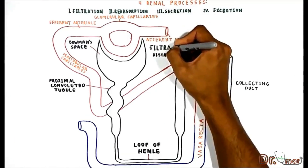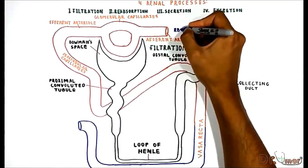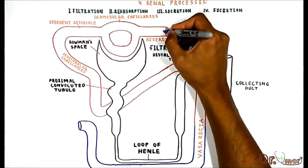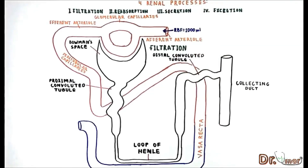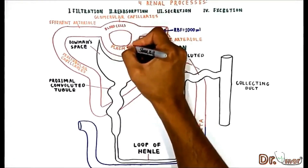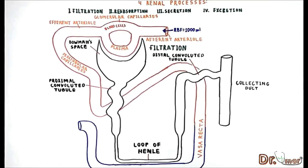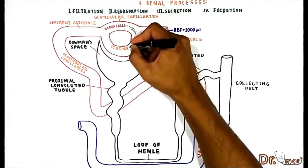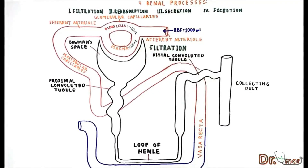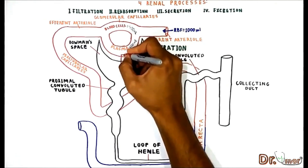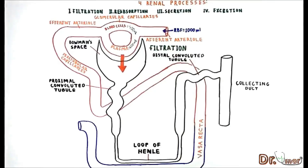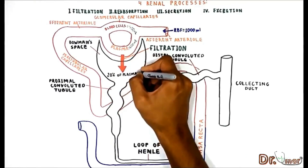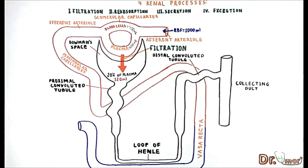Glomerular filtration is the first step in making urine. Blood flow to the kidneys is about 1000 mL per minute, or 20% of the cardiac output. Blood is composed of blood cells and plasma. From one liter of blood entering the kidneys, 40% is blood cells — equivalent to 400 mL — and 60% is plasma, equal to 600 mL. When plasma reaches the glomerular capillary, it is filtered into the Bowman's space and flows downstream through the tubule lumen. From 600 mL of plasma, only 20%, equal to 120 mL, will be filtered into the Bowman's space.